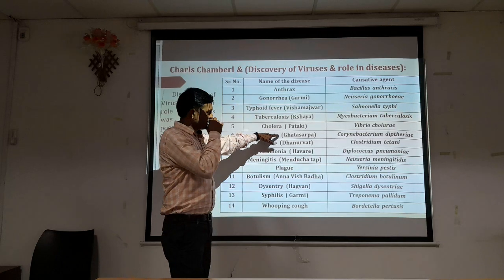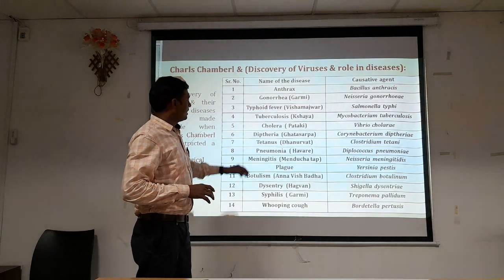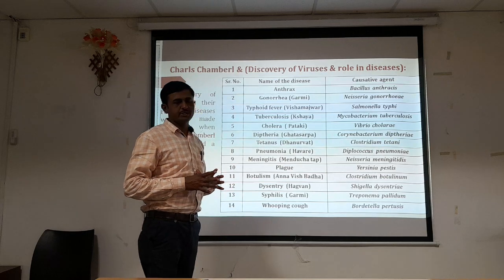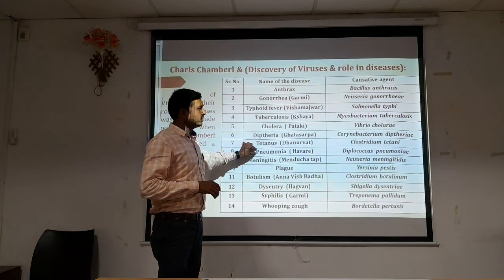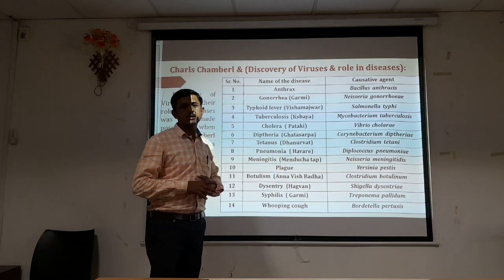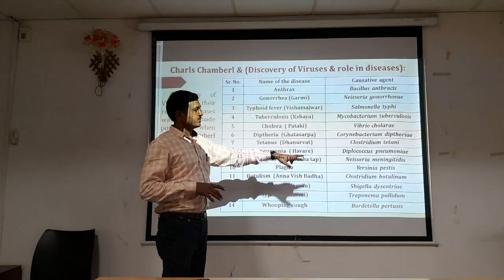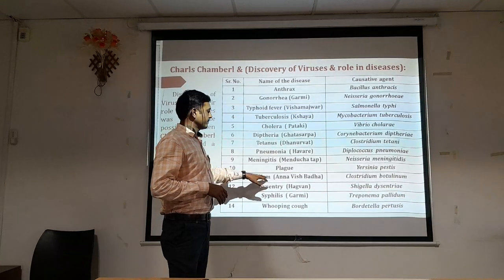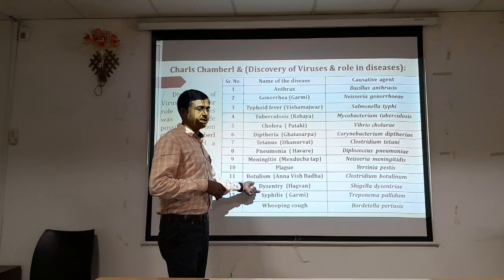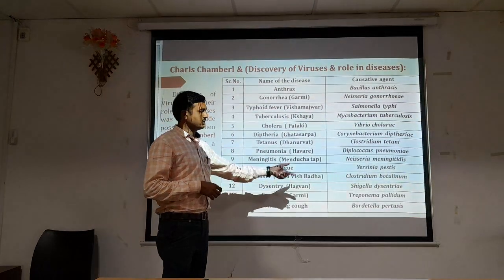Diphtheria is caused by Corynebacterium diphtheriae. Tetanus is caused by Clostridium tetani. Pneumonia is caused by Diplococcus pneumoniae. Meningitis is caused by Neisseria meningitidis. Plague is caused by Yersinia pestis. Botulism is caused by Clostridium botulinum. Dysentery is caused by Shigella dysenteriae. Syphilis is caused by Treponema pallidum. So these pathogens cause different types of diseases.